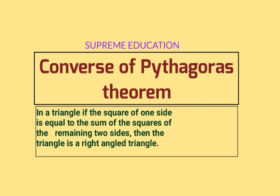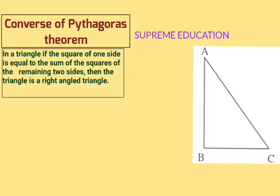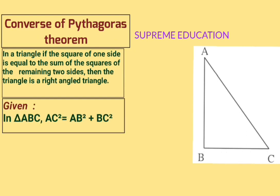We draw triangle ABC as our required triangle. From the statement, the square of one side is equal to the sum of squares of the remaining two sides. We take that side as AC, so AC² = AB² + BC². Therefore, the given is: in triangle ABC, AC² = AB² + BC².